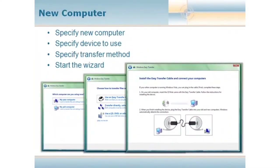On your new Vista computer, you run this wizard and specify that this is the new computer. You can also specify which device and which transfer method to use. If you have an older computer, it obviously doesn't have the Vista Easy Transfer Wizard, so you're able to build a disk and run the wizard from that disk on the old machine to kick off the transfer. On the old computer, you say this is the old computer, specify which device you're getting settings from, what your transfer method is going to be, and start the wizard. It walks you through what documents, files, and user accounts you want to transfer.